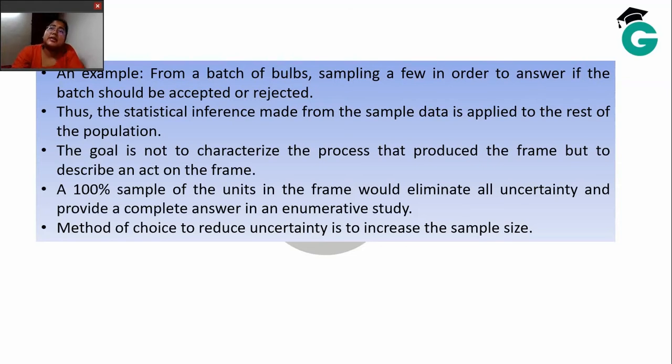If you find that the sample you've taken consists of bad bulbs, you conclude that most of the bulbs in this batch are bad and hence you're not going to accept the batch. Similarly, if they're in good working condition you can reasonably say that most of the bulbs in this batch are actually good. A 100% sample of the units in the frame would eliminate all of the uncertainty and provide you a complete answer in an enumerative study. This is the most important characteristic of an enumerative study.